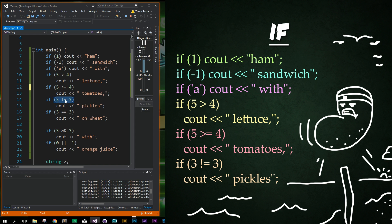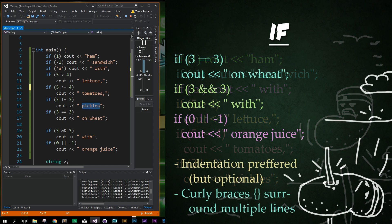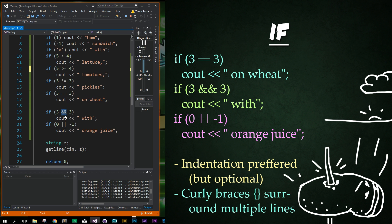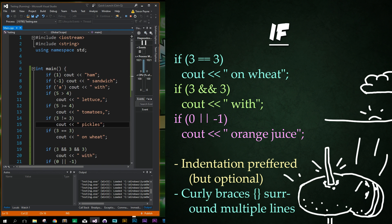We have another condition five is greater than four and it's just checking for tomatoes. I actually meant this to be a greater than or equal to, but whatever. Then we have the condition to check for is three not equal to three, which is false. So we have no pickles on our sandwich because I hate pickles on my sandwich. Then we have a condition to check if these two values are exactly the same, which they are, so it says on wheat. We have our and operator and or operators here, and you can stack these multiples next to each other. They'll stack up nicely and evaluate all the same.